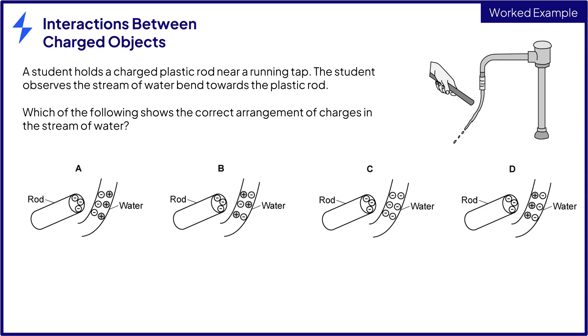So we need to choose the diagram that best represents what would happen if the negatively charged rod was held close to the stream of water. Now we know that opposites attract and diagram A shows like charges attracting, so that can't be correct. And same goes for answer option C.